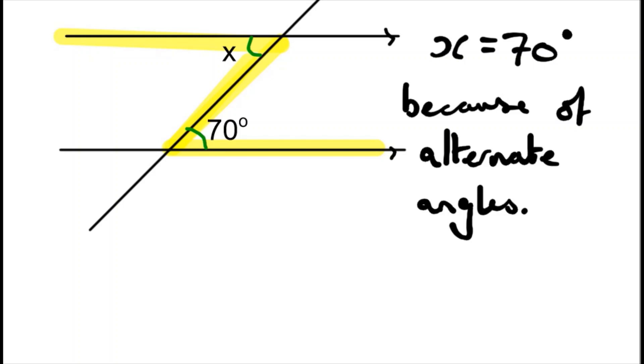Now, if we have a question like this in an exam paper, you will need to state the reason. So for our example, it's alternate angles. You'll need to state this to get full marks. It is not enough just to state the value.